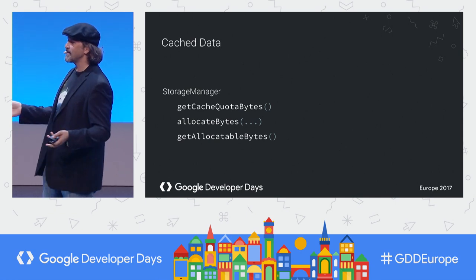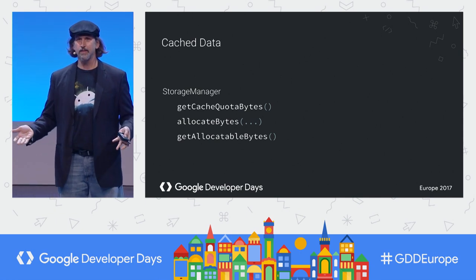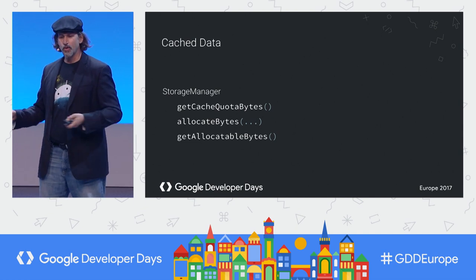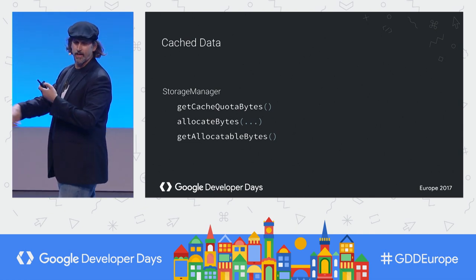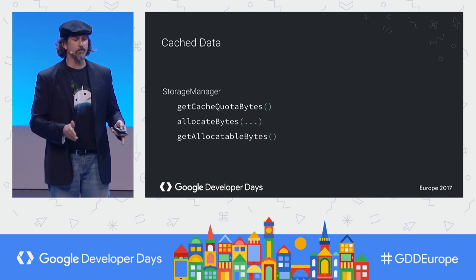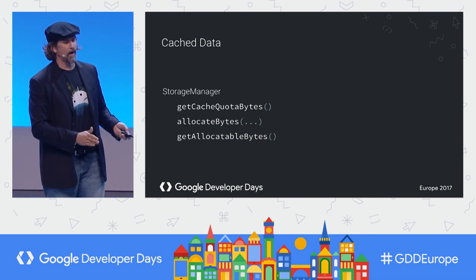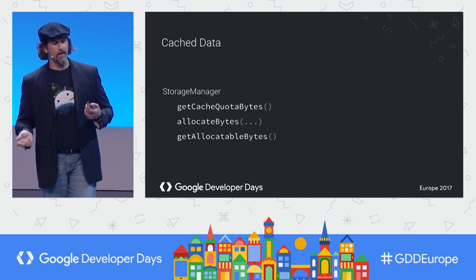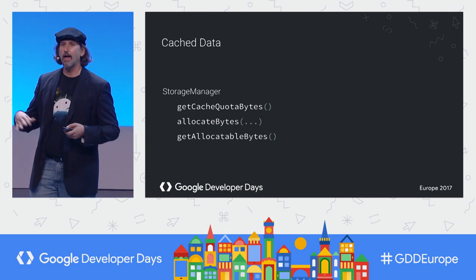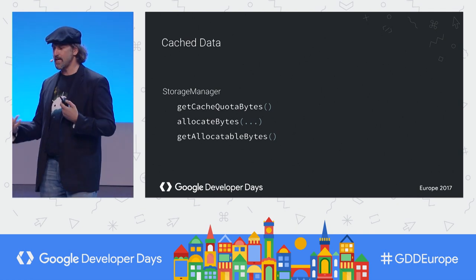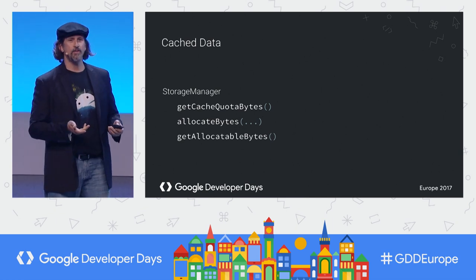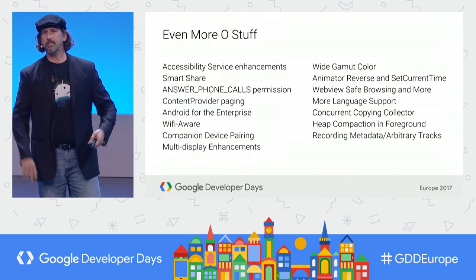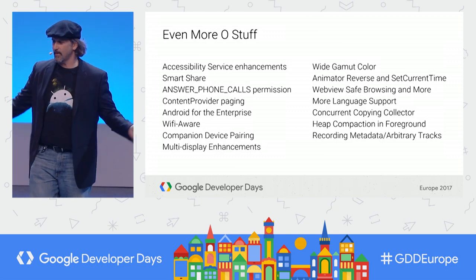We added proper support for caching. The quota can change depending on how frequently the user actually interacts with your app. The allocate takes deletable cache into account. There's tons more stuff in O — I'm not going to go through it all here.